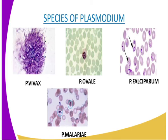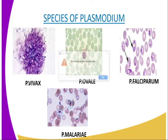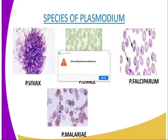Plasmodium is transmitted from an infected person to a healthy person by the female Anopheles mosquito. When the mosquito bites an infected person, it sucks blood containing the parasites. Inside the mosquito, the plasmodia develop into infective stages. When the same mosquito next bites a healthy person, it passes the infective Plasmodium from its salivary glands into the bloodstream. The incubation period lasts between seven to ten days, during which the parasites infect the liver cells where they multiply.